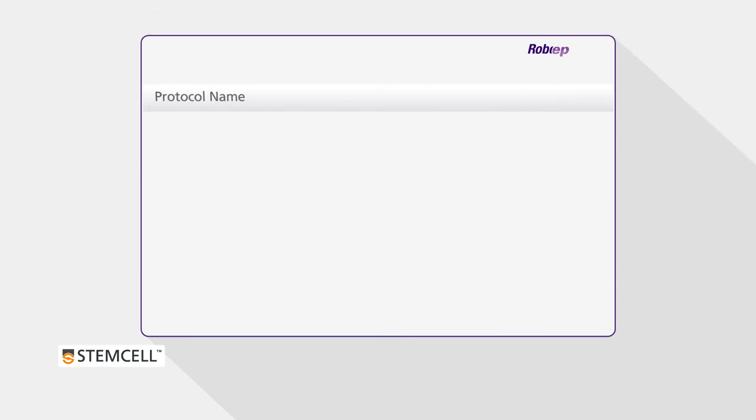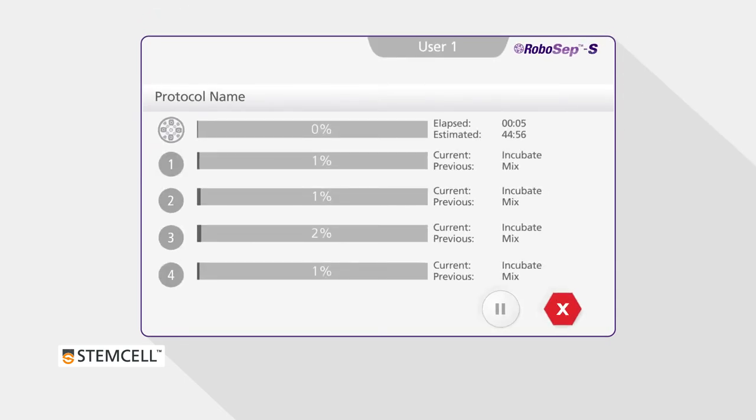A Run Progress screen will appear after approximately one minute. The time remaining until each quadrant completion is displayed on the screen.